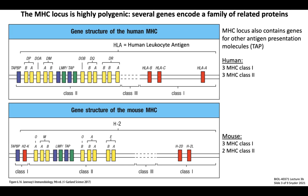The MHC locus also contains genes for other important components of antigen presentation, including the TAP complex, which is responsible for transporting cytosolic peptides into the endoplasmic reticulum for loading onto MHC 1, as well as HLA-DM, which is responsible for removing CLIP from MHC class 2 in acidified endosomes. In mice, the homologue of HLA-DM is called H2-M. The main take-home point is that the MHC locus is unique in that MHC is encoded by multiple distinct forms of each molecule — what we refer to as being polygenic.